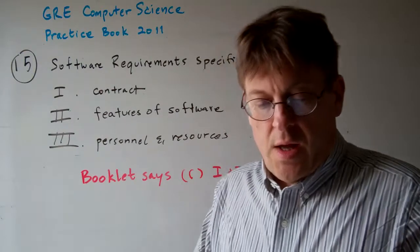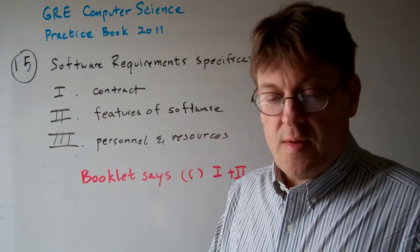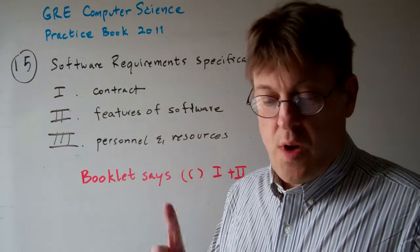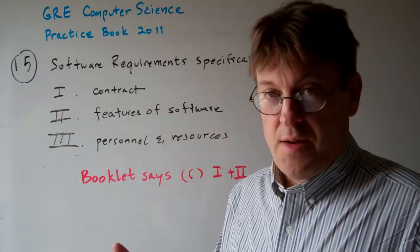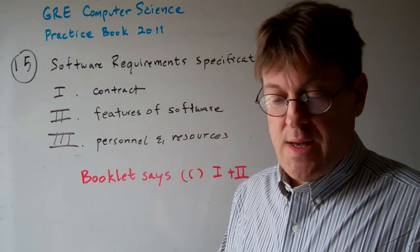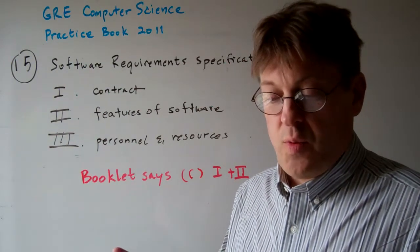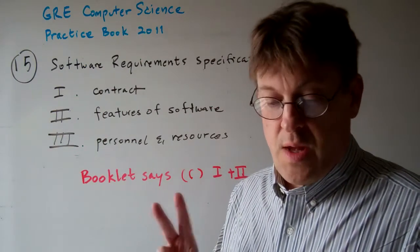Question 15. A software requirements specification is: one, a contract between developers and clients, specifying what the developers will produce for the clients; two,